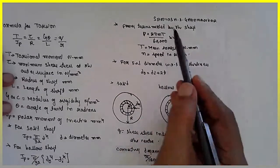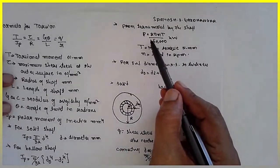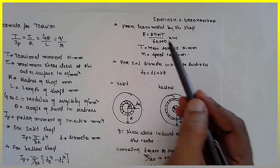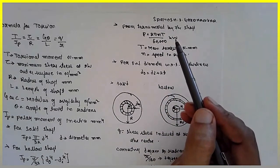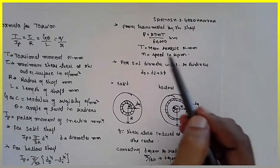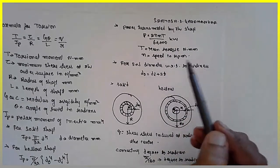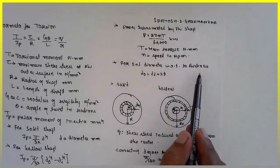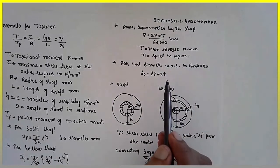Now in order to find out the power, the formula is P is equal to 2 pi NT divided by 60,000 kilowatts, where T is the torque. It has to express in terms of newton meter, N is speed in terms of RPM. This is for finding the diameter with respect to thickness.